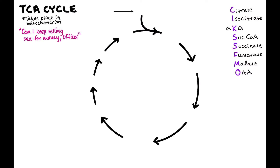First of all, you've got to know all of your intermediates in the TCA cycle. The mnemonic is: think of a prostitute out selling themselves for sex, and a cop comes along and the prostitute asks, 'Can I keep selling sex for money, officer?' The products are: citrate, isocitrate, alpha-ketoglutarate, succinyl-CoA, succinate, fumarate, malate, and oxaloacetate.